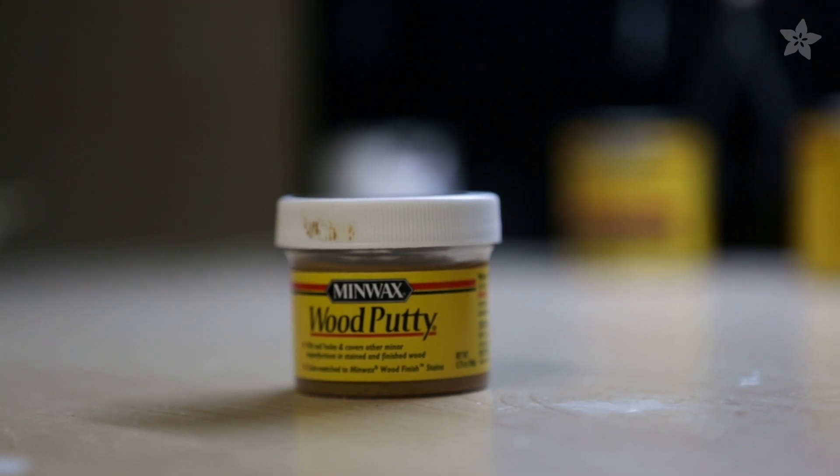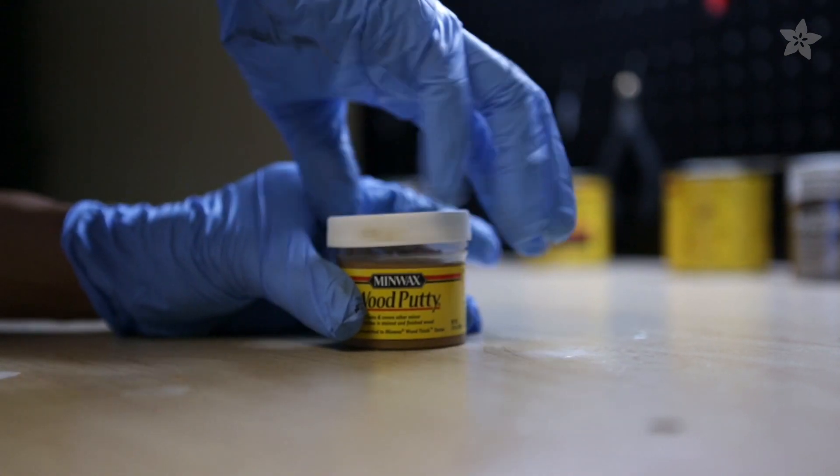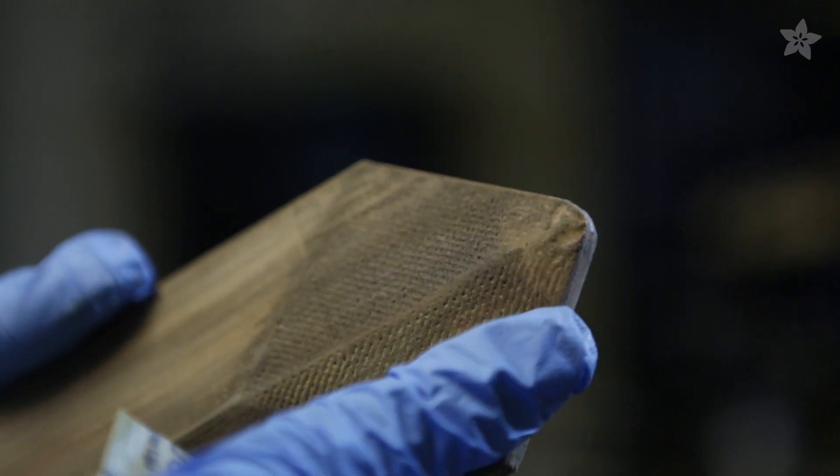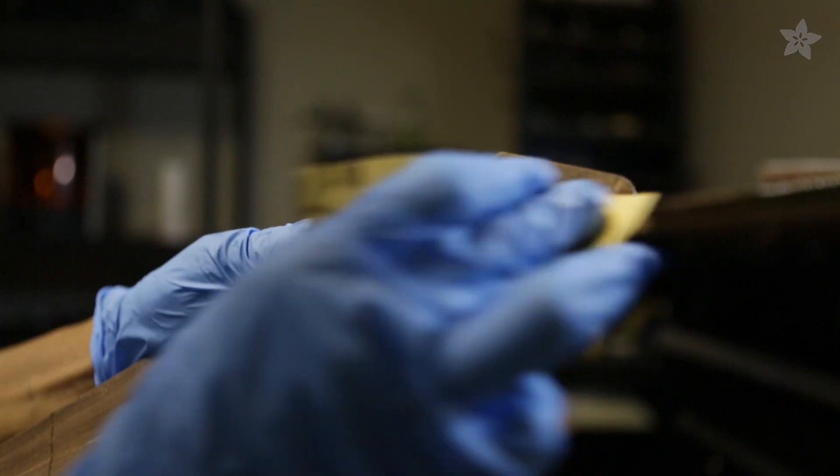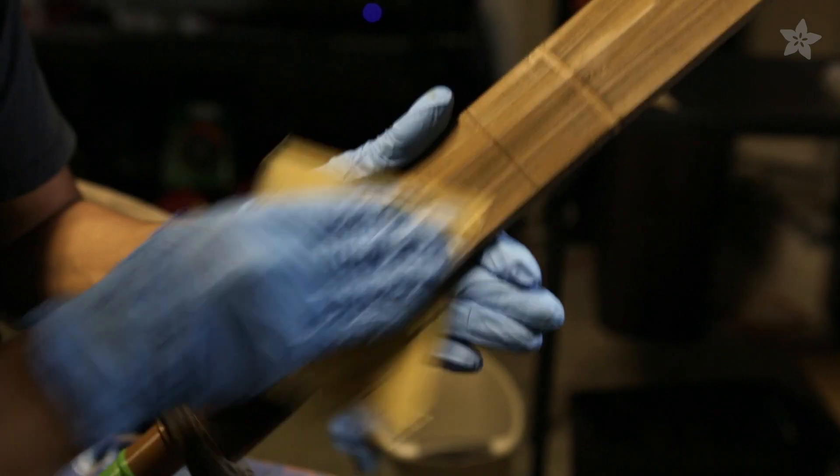Wood putty worked great for filling in some of the gaps on the top part of the blade tip. Make sure to apply it after you're done staining, then let it dry and sand off any leftovers.